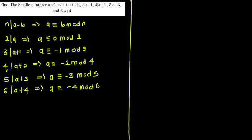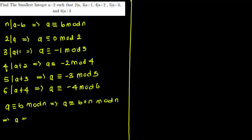Another key fact: if a is congruent to b mod n, this implies that a is also congruent to b plus n mod n. So a ≡ 0 (mod 2) implies a ≡ 2 (mod 2).